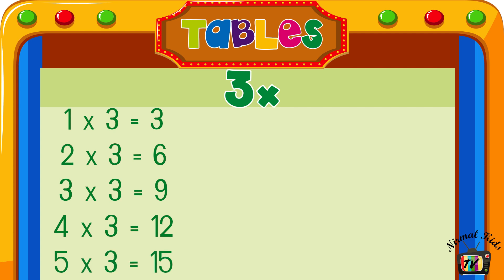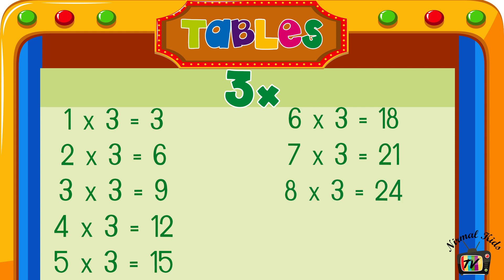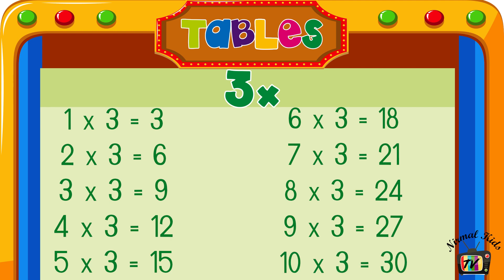5 into 3 is equal to 15. 6 into 3 is equal to 18. 7 into 3 is equal to 21. 8 into 3 is equal to 24. 9 into 3 is equal to 27. 10 into 3 is equal to 30.